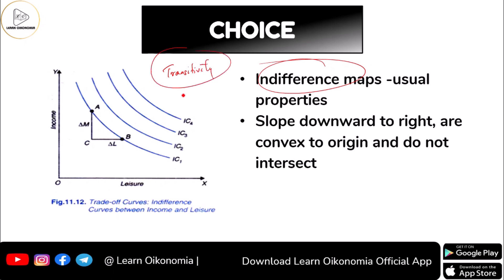In this figure, leisure is measured along the X-axis and income is measured along the Y-axis. You have IC1, IC2, IC3, and IC4. IC4 gives you more satisfaction compared to IC1, because when you move to higher and higher indifference curves it shows you are getting more and more satisfaction — the same thing that holds for a common indifference curve.